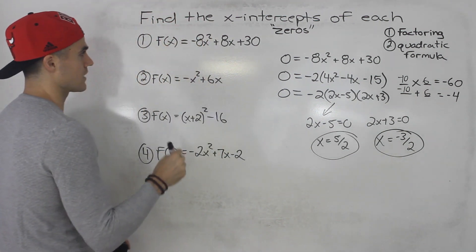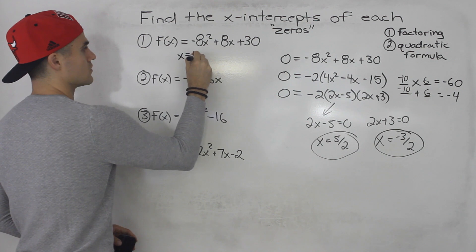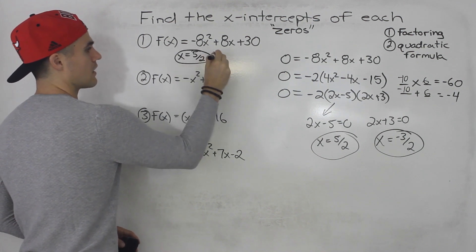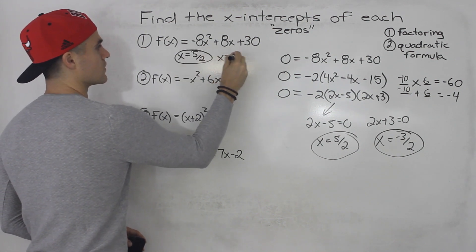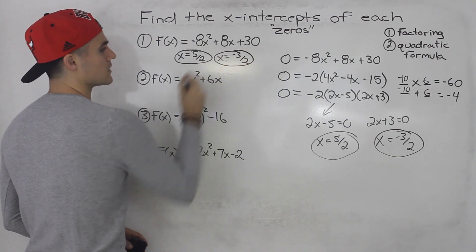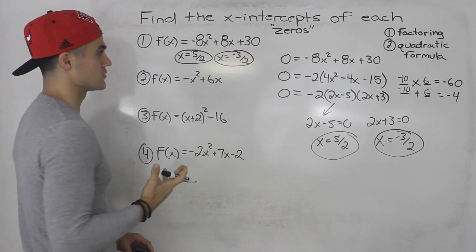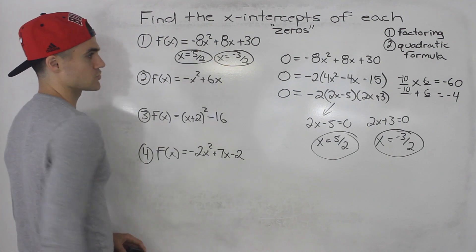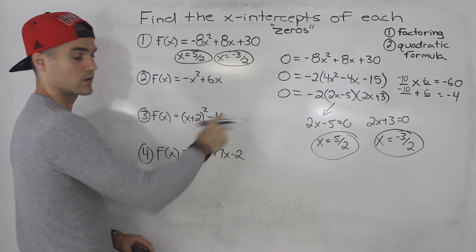From here, 2x minus 5 equals 0 gives x equals 5 over 2, or 2.5. And 2x plus 3 equals 0 gives x equals negative 3 over 2, or negative 1.5. Those are the two x-intercepts for that quadratic — solved by factoring.